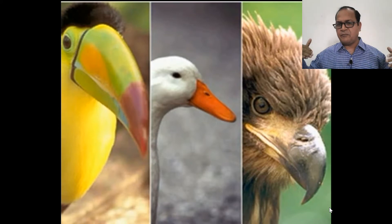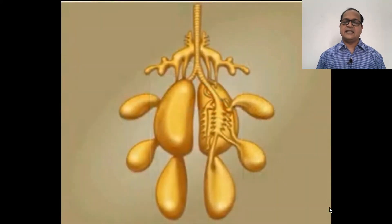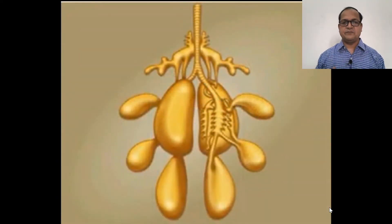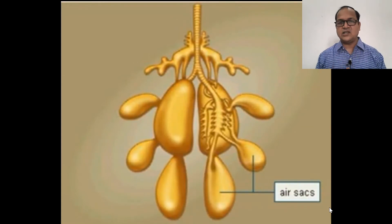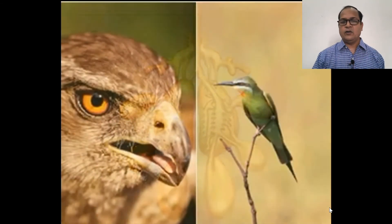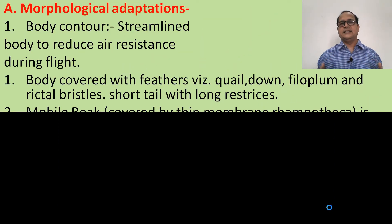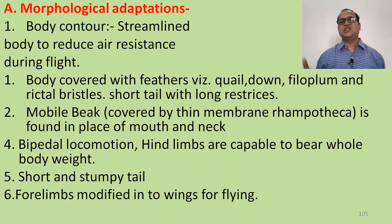A horny beak is present in place of mouth jaws and teeth to reduce body weight. The beak is used to pick up grains, for preening feathers, and for protection — both defensive and offensive. Some extra air chambers are present in their body besides lungs, so they can hold air for a period of time. Their vision is very sensitive and efficient.